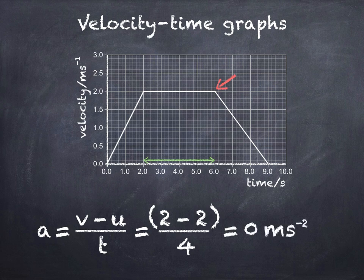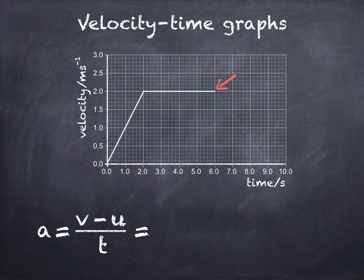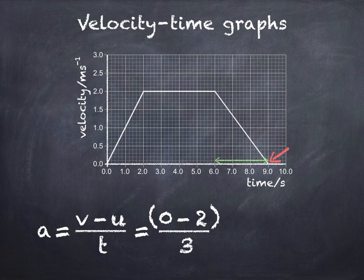For the third section, which is a constant deceleration, initial velocity u is 2 meters per second and final velocity v is 0 meters per second. Time in this case is 3 seconds. When we substitute these values into the equation, we find an acceleration of negative 0.67 meters per second per second.